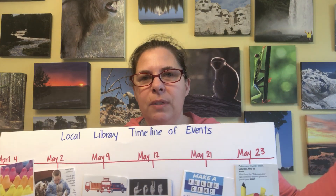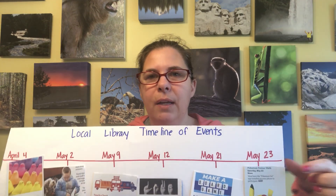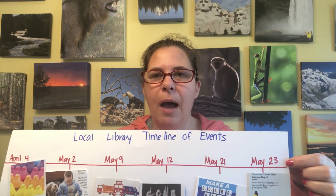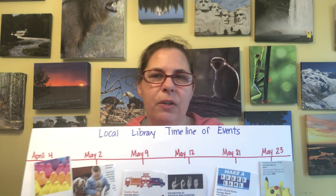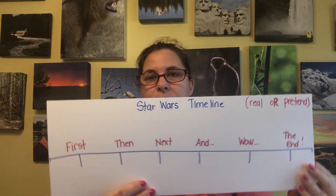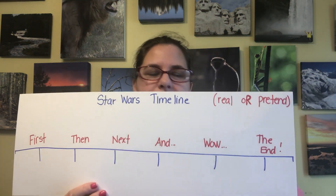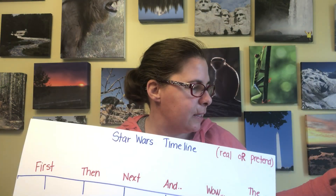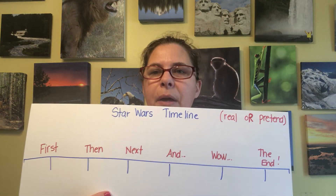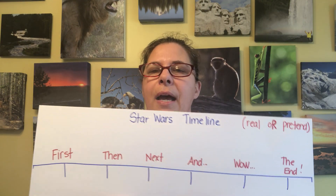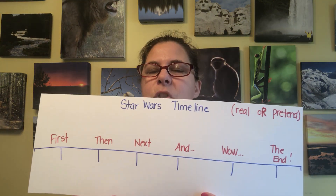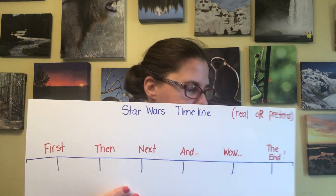Again, this line continues on — it doesn't stop. These are just things happening at my library. The last one is one that you could make up all on your own. I found some Star Wars stickers in my son's classroom, and you can make up your own type of story timeline.